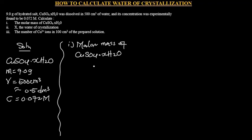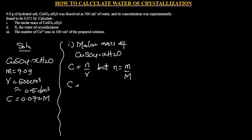Since we don't know the value of X, when we try to calculate the molar mass we're going to have a variable inside. So we can look through the information given and work out the molar mass from it. Concentration is equal to mole over volume, and mole is equal to mass over molar mass. So putting mole into that equation, concentration equals mass over molar mass times volume.